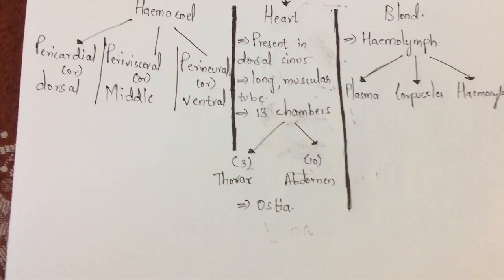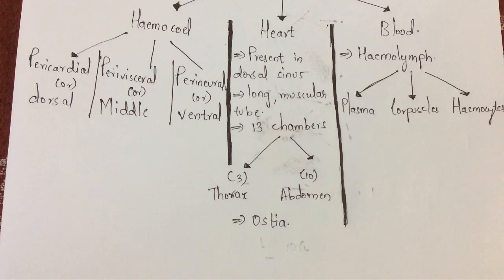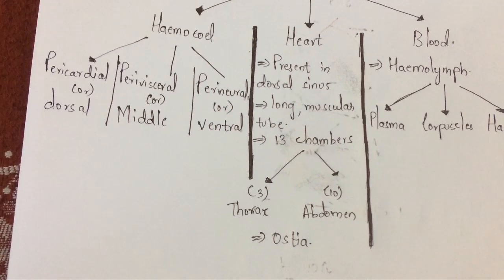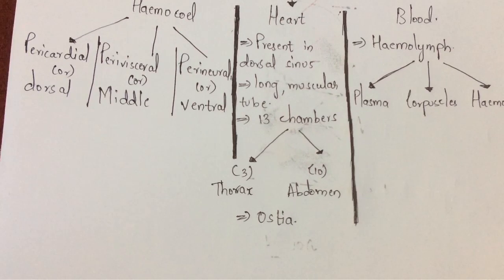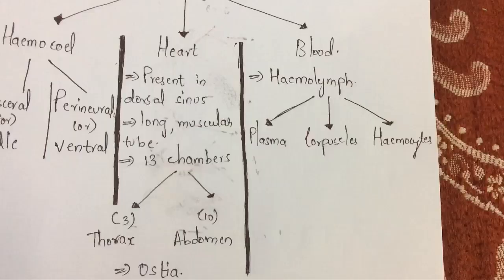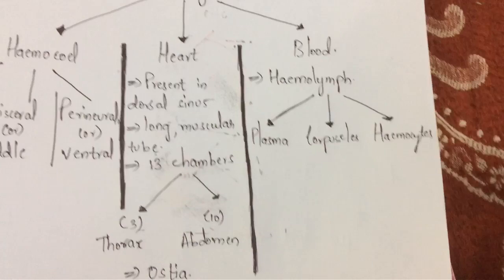Now let us talk about blood, or hemolymph. Hemolymph is the blood of Periplaneta americana. In the human body, blood is red in color due to the presence of the pigment hemoglobin. However, in Periplaneta americana, the blood — hemolymph — is colorless, as it lacks hemoglobin. The hemolymph mainly consists of plasma, corpuscles, and hemocytes.